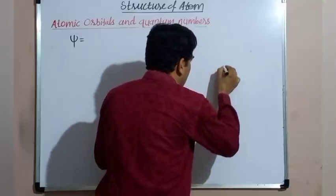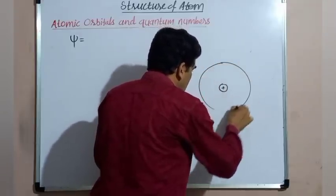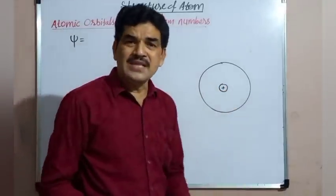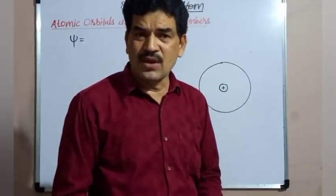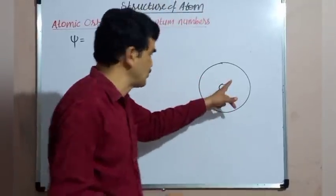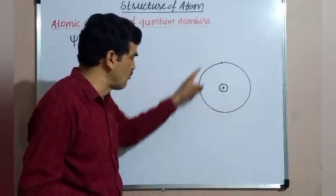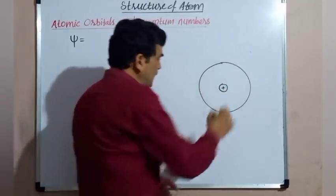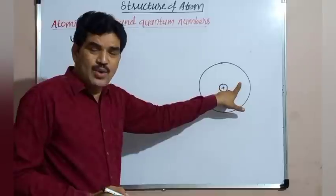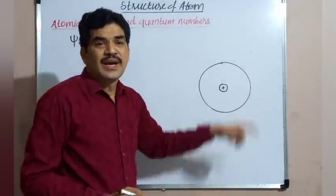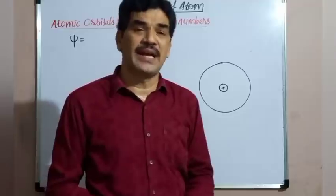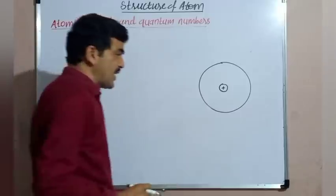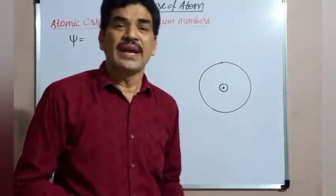This is the nucleus and this is the space around the nucleus. In the space around the nucleus, electrons are moving in circular pathways — circular orbits. This is the space in which the electrons are moving. As the electrons are moving, a particular region around the nucleus has a maximum probability of finding the electron.